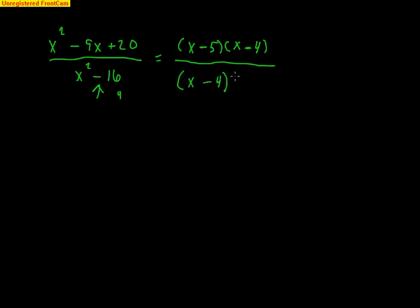Now, what do I notice here after factoring? The top has two factors — just like 8 was 2 times 4 — and the bottom has two factors — just like 6 was 2 times 3 — and I notice that they have a common factor. The top and the bottom have a common factor of (x minus 4), so I can cancel it out. I'm only allowed to cancel out if there's a common factor.